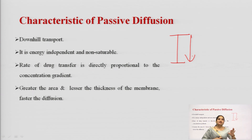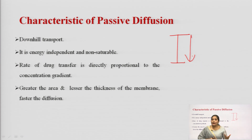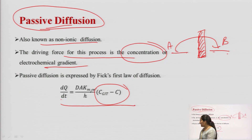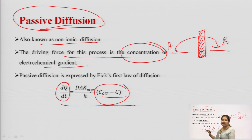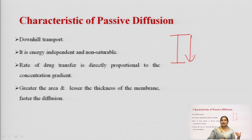Passive diffusion is an energy-independent and non-saturable process, because it is a passive process with no requirement of energy. The rate of drug transfer is directly proportional to the concentration gradient — as seen in the equation where dq/dt is directly proportional to the difference between GIT concentration and blood concentration.